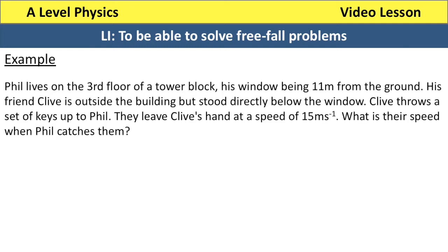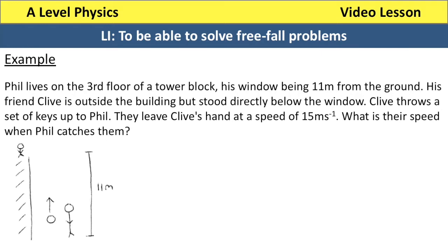Now let's deal with another example. Phil lives on the third floor of a tower block, his window being 11 metres from the ground. His friend Clive is outside the building stood directly below the window. Clive throws a set of keys up to Phil; they leave Clive's hand at a speed of 15 metres per second. What is their speed when Phil catches them? I've done a little sketch so you can visualise what's going on. Usually in an exam they will give you a diagram but not always, so it is important that you are able to model situations.